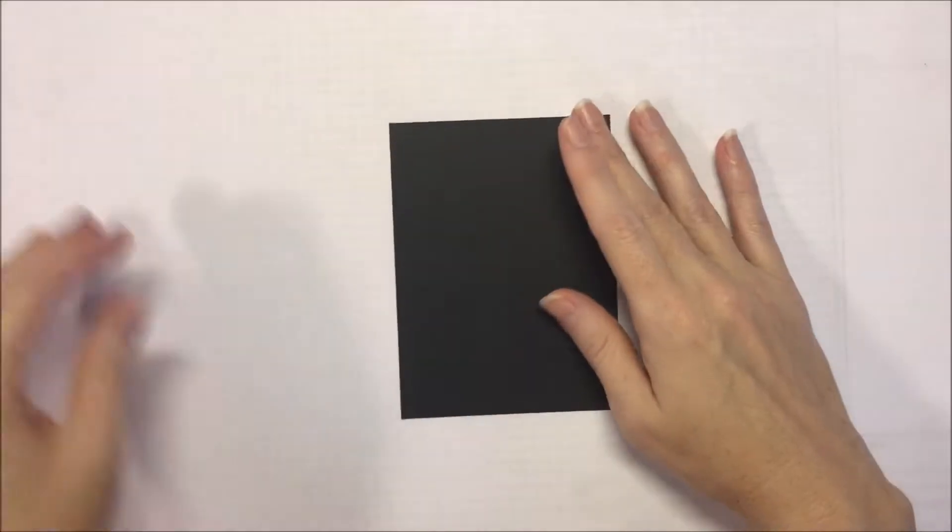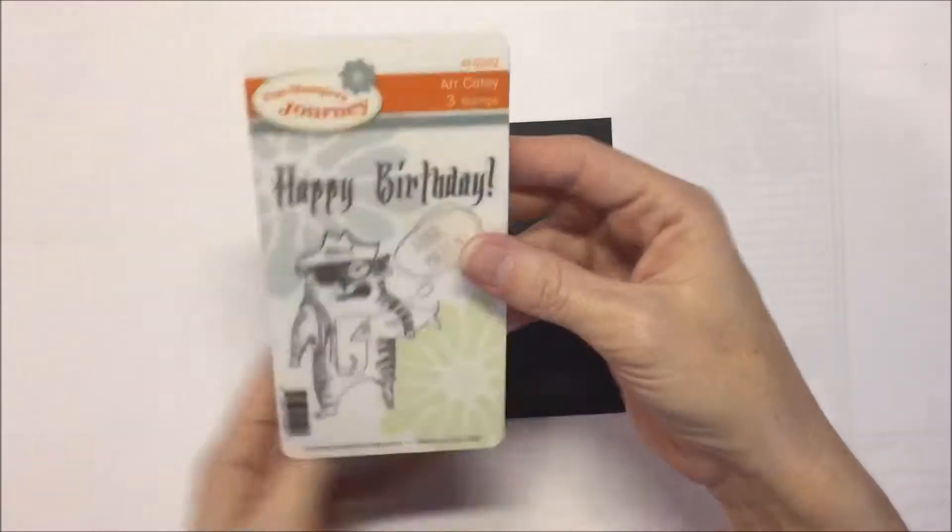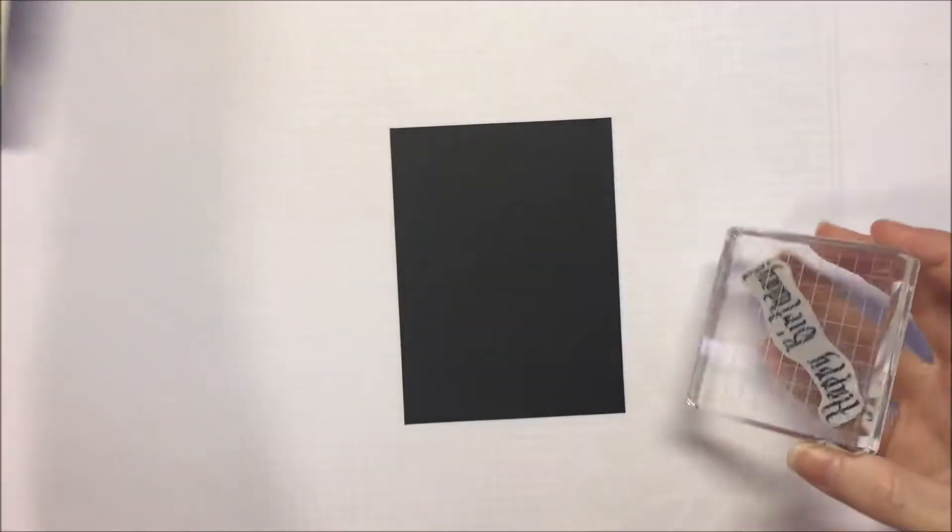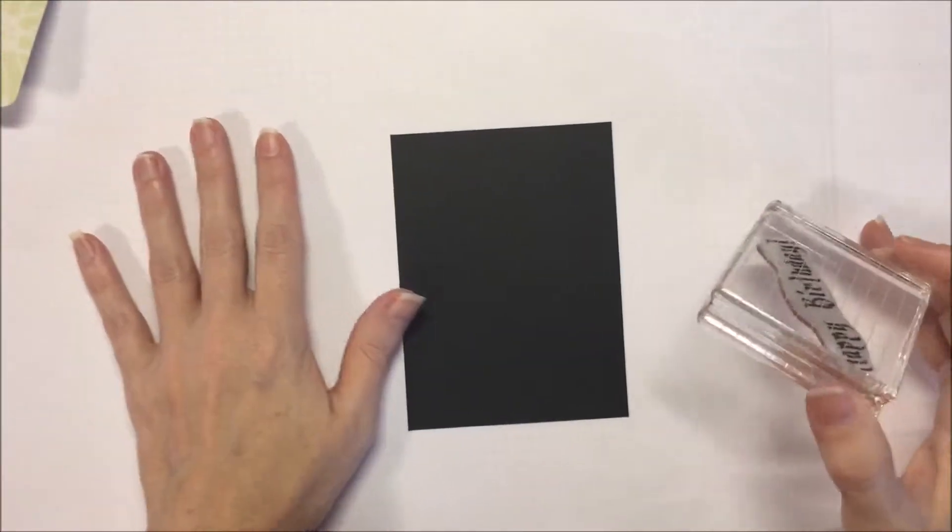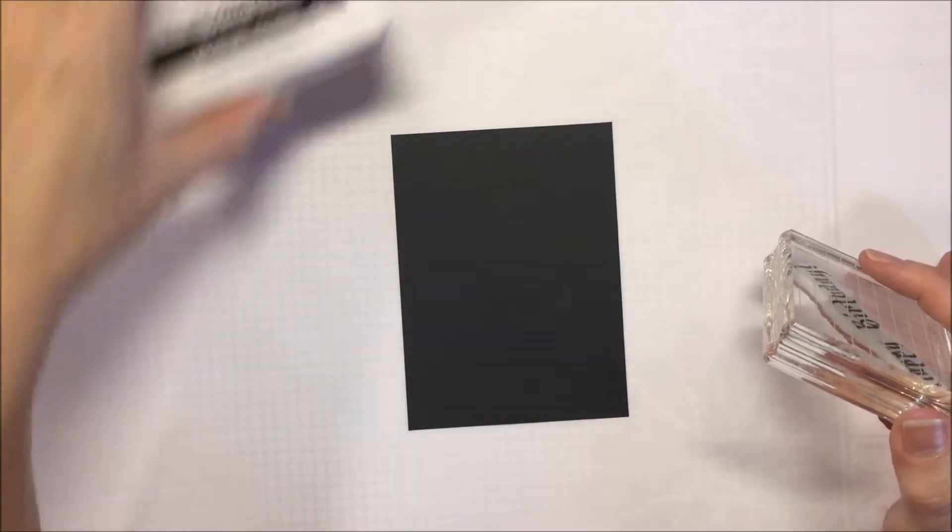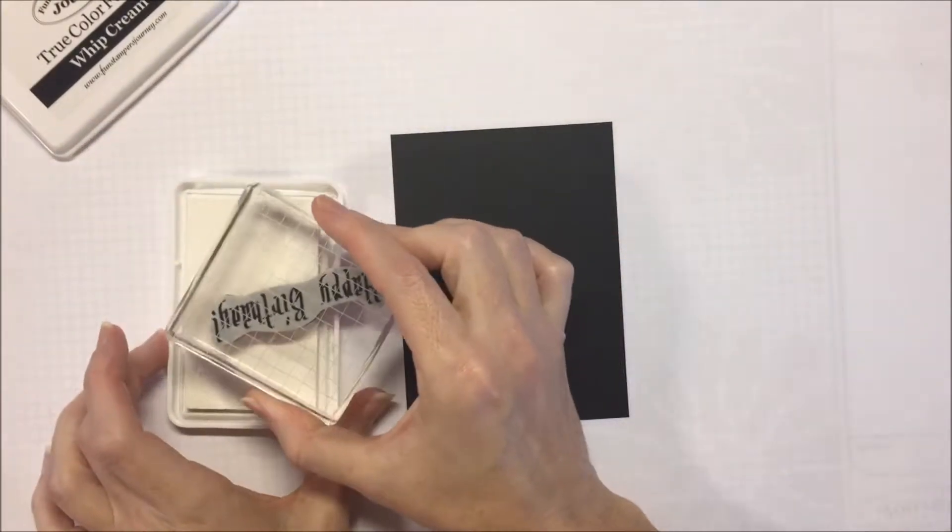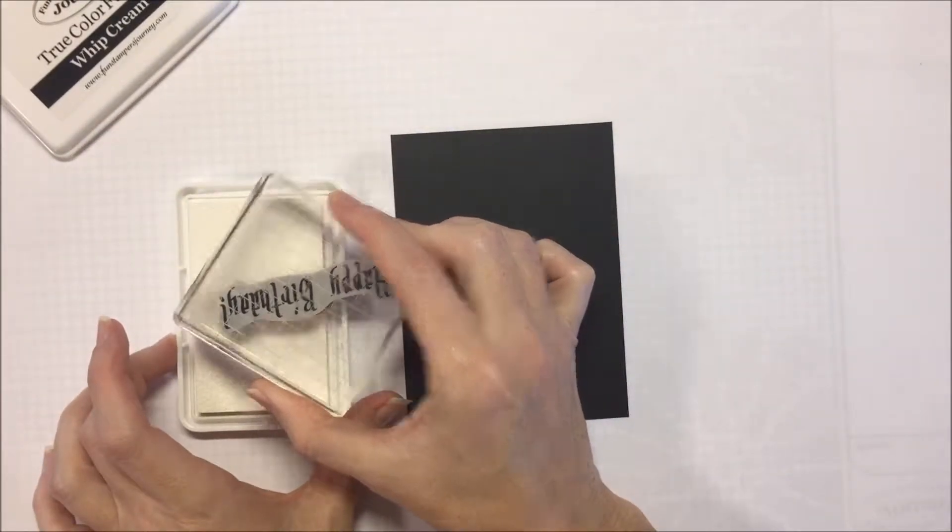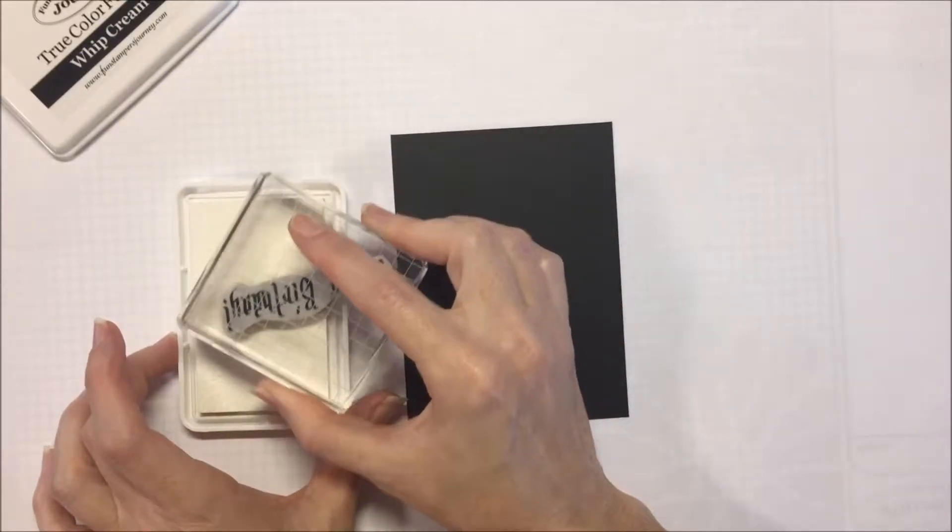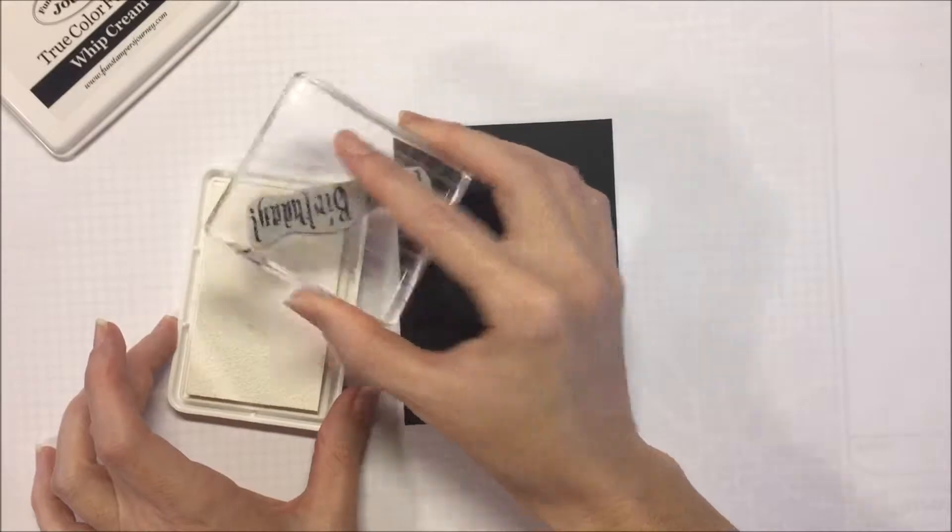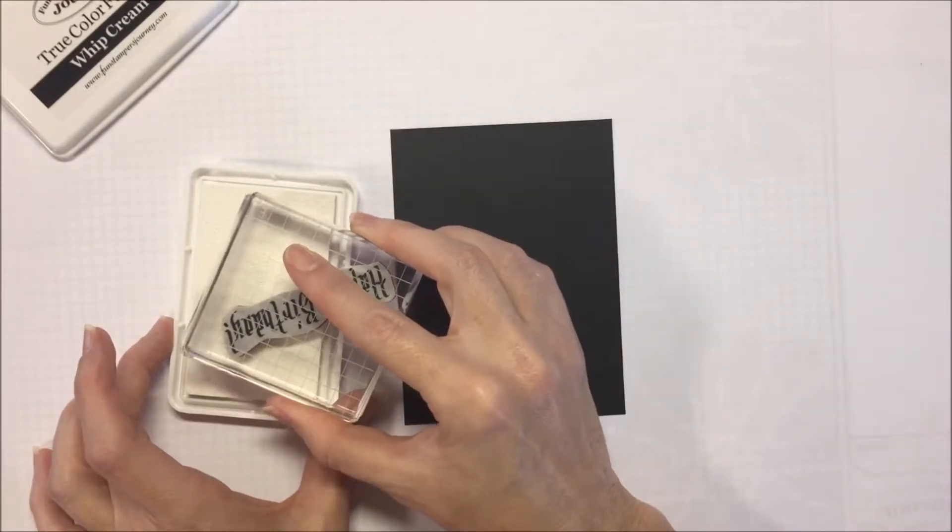I'm going to start with a piece of black licorice that is three and five-eighths by four and seven-eighths. I've got the happy birthday sentiment from our Katty AT set and I'm going to be using whipped cream True Color Fusion pigment ink. I'm just going to ink up the birthday sentiment. This is well indexed so it's easy for me to know where I'm getting ink. I'm just going to get that inked up nice and juicy.